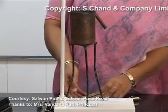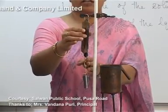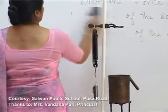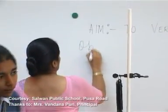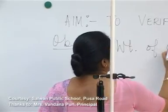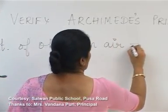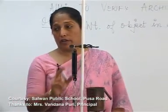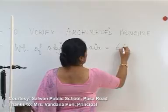First, we find the weight of the object in air. We suspend it on the spring balance and record the reading. One of you come and read it. The weight is 65 grams. So the weight of the object in air is 65 grams.